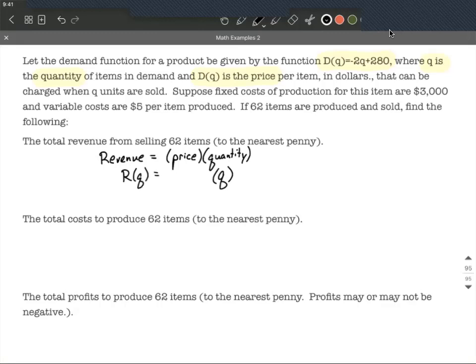Now to represent the price, you'll notice they said d of q is the price. So I'm going to replace d of q with the right hand side there: negative 2 multiplied by q plus 280, and then all that quantity is multiplied by q. That's going to give us a representation of the revenue function. We could distribute the q from the end into each one of those first two terms if we wanted to, but it's not really necessary.